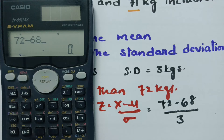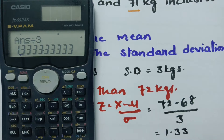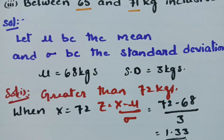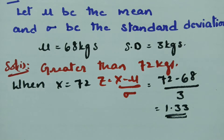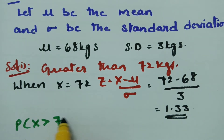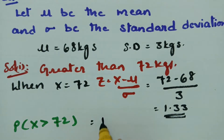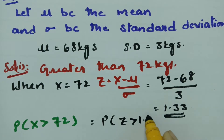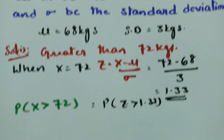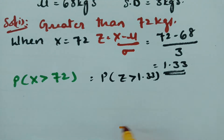So 72 minus 68 divided by 3 gives a z value of 1.33. The value needed is the probability of x greater than 72, which in terms of z is the probability of z greater than 1.33.